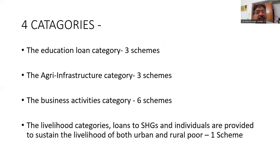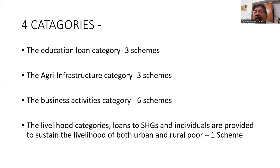There are four categories: Education Loan, having three schemes; Agri Infrastructure Loan, having three schemes; Business Activity Loan, having six schemes; and Livelihood category, having one scheme — that is for self-help groups and individuals, provided to sustain the livelihood of both urban and rural poor.